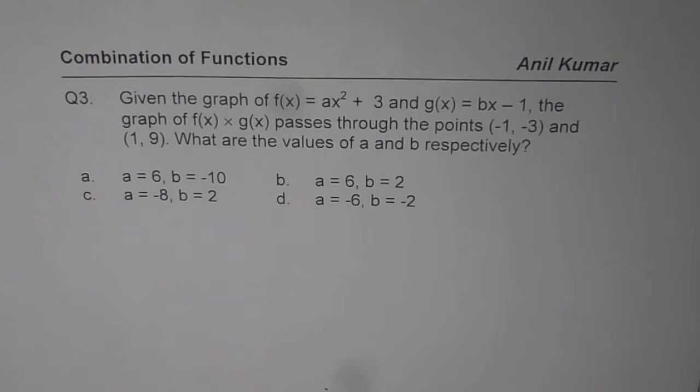the graph of f of x times g of x passes through the points minus 1, minus 3 and 1, 9. What are the values of a and b respectively?